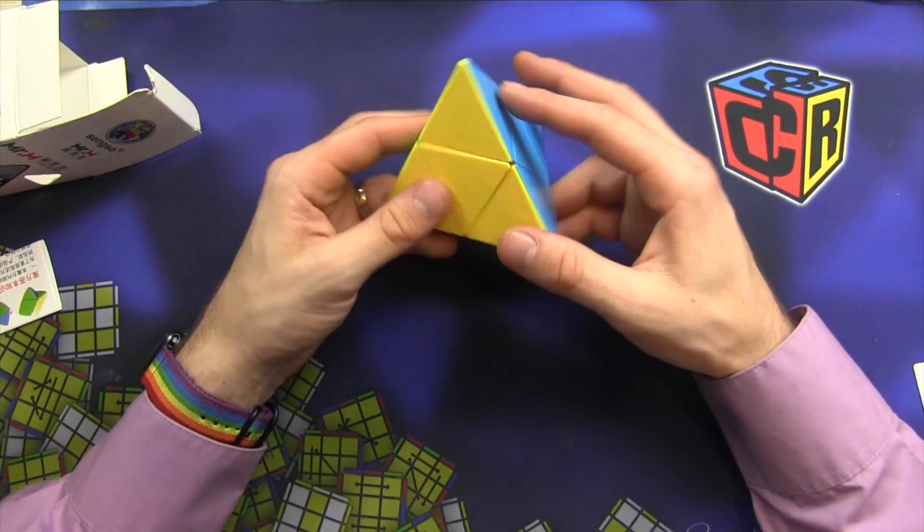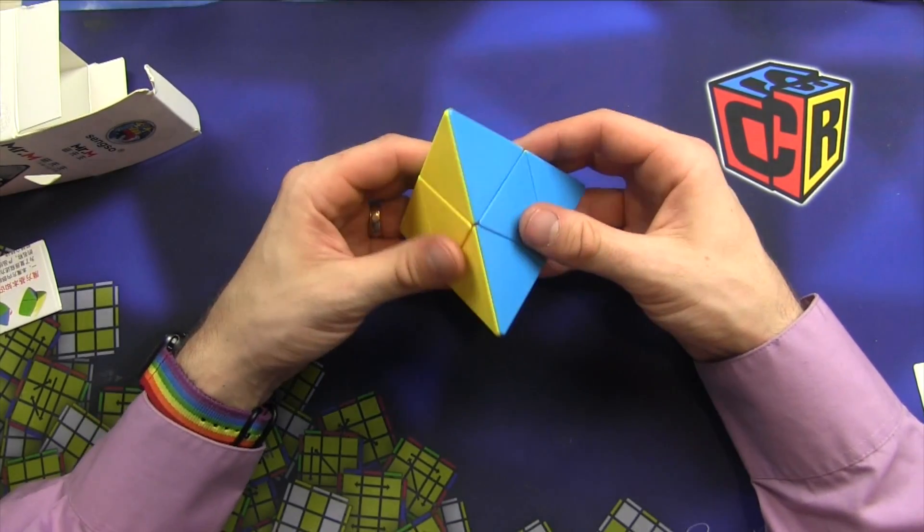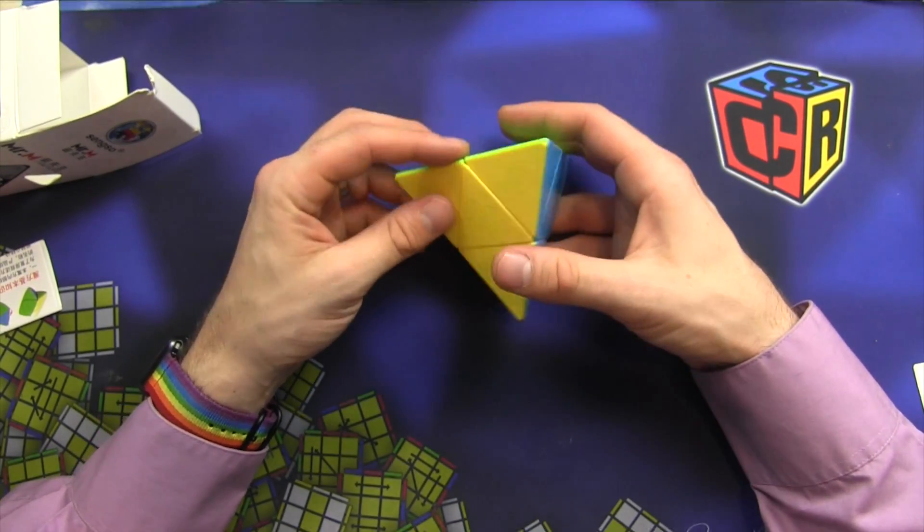If you don't know what that is, looking at this looks like you can just turn the tips but you cannot. A pyromorphix is a two by two that has been cut into the shape of a pyramid.